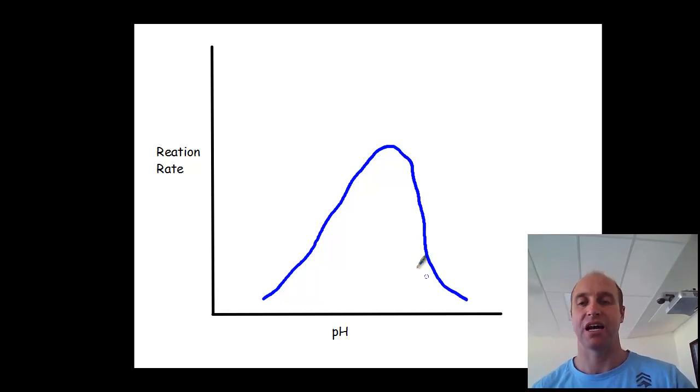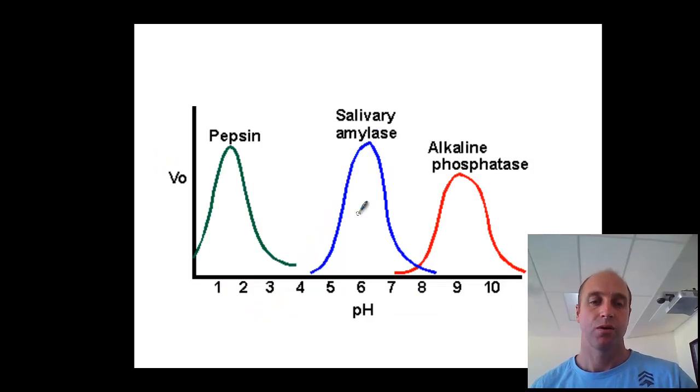Now, enzymes can get denatured in extreme pHs, but quite often there's a bit more of a gradual process of this before, rather than just reaching a critical point. And that graph may actually have zero reaction rate if the enzyme is denatured. Quite often we see graphs like this that show a variety of different enzymes, all having a particular optimum pH, a particular pH where they get the biggest reaction rate.